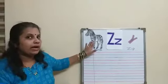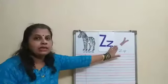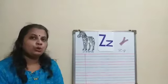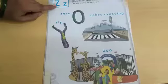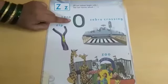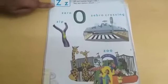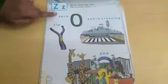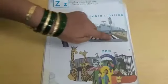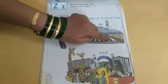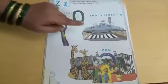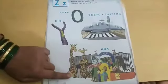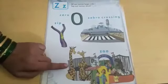Zebra is a wild animal. Z for zip. Now I will show you some more pictures related to Z. Z for zero. Z for zebra crossing — you cross the road on these black and white lines. Z for zoo — you see many animals in the zoo.